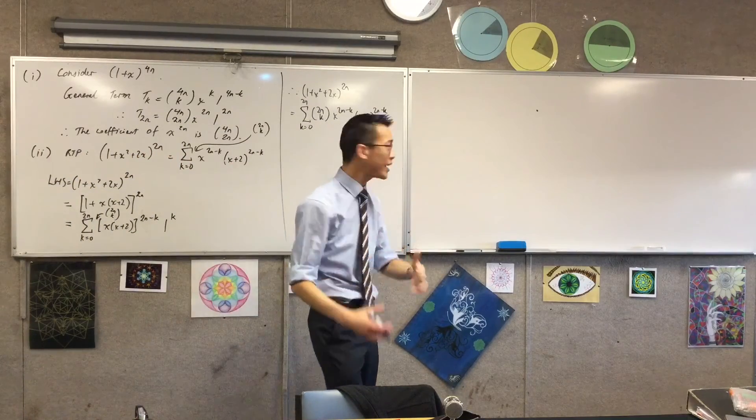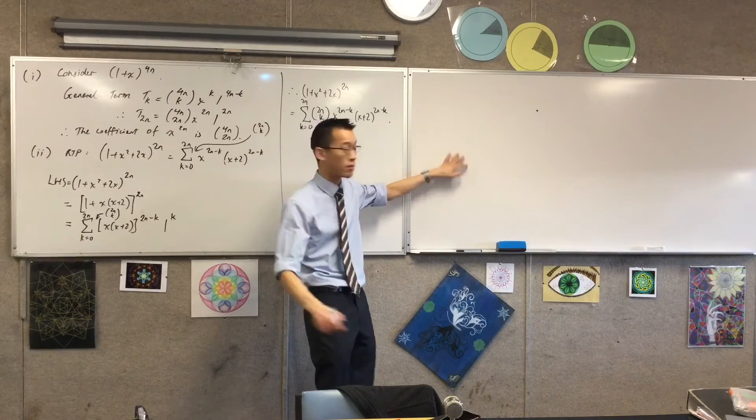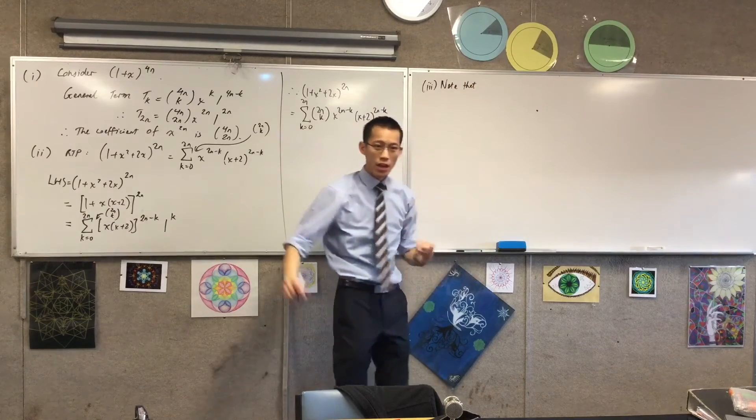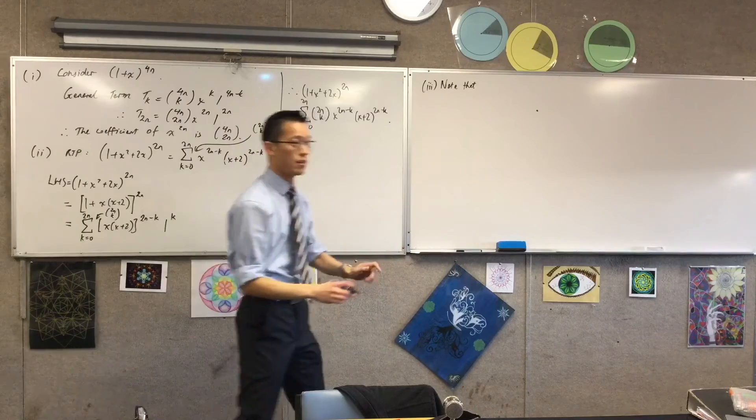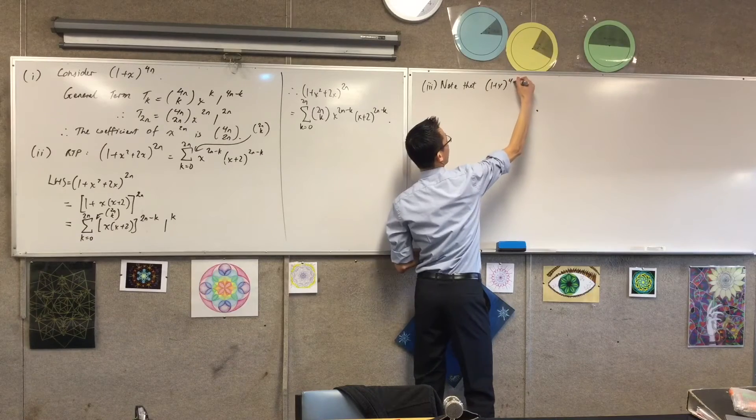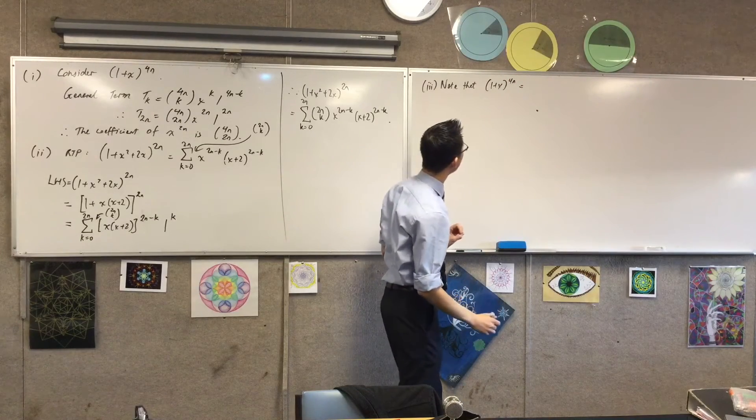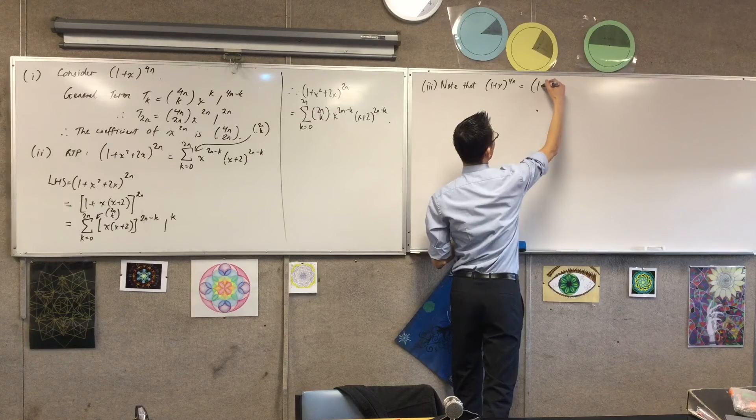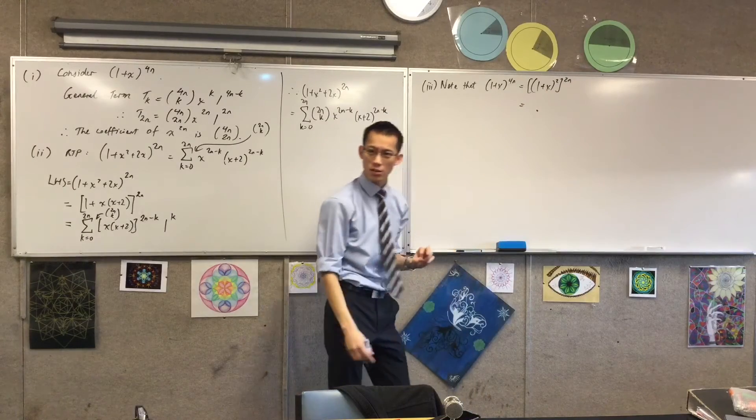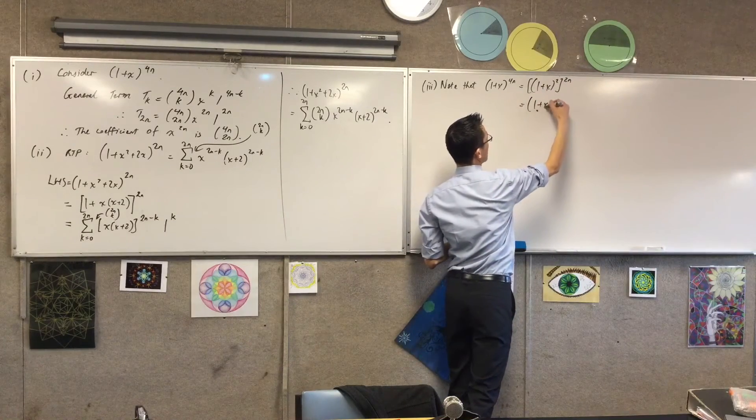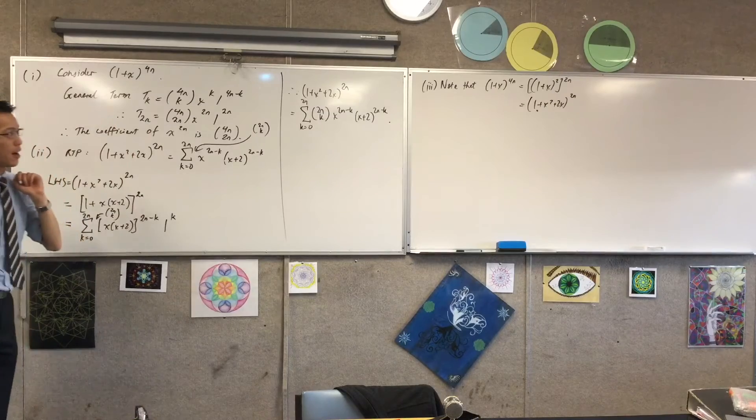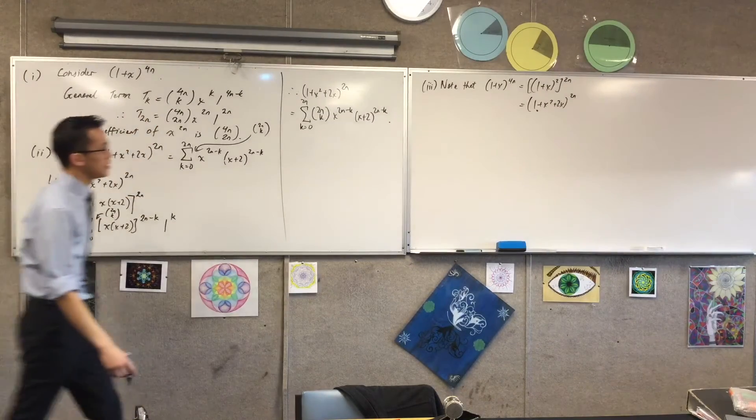Alright, so the first thing I need to do is, a lot of the stuff you said informally, I'd better put it down, right? We can't just assume, oh, they'll get it. So, for part three, the first thing I say is, note that, you've got equivalence between the things, the results you're looking at in part one and part two. So, I'm going to say, note that one plus x to the four n is equal to one plus x squared to the power of two n. I'm just using my index laws there.